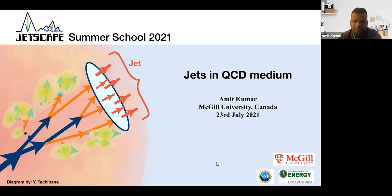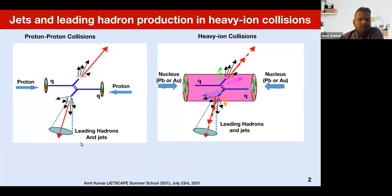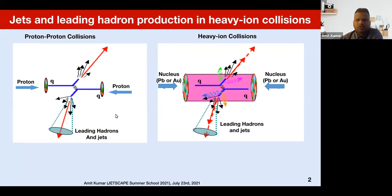I'm going to talk about an overview of jet physics, and especially I will focus on jet energy loss in quark-gluon plasma in the high energy and high virtuality phase. Here I have a picture showing production of high-Pt hadrons and high-Pt jets in proton-proton collision and in heavy-ion collisions. Pt means the transverse momentum of the leading hadron or jets that is transverse to the beam direction.